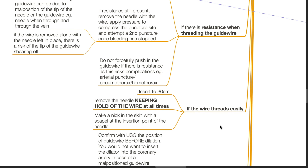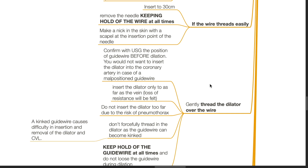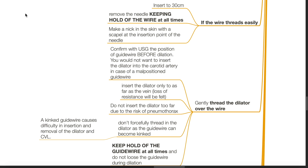If the wire threads easily, insert to 30 cm, remove the needle while keeping hold of the wire at all times, and make a nick at the skin with a scalpel at the insertion point. Gently thread the dilator over the wire. Confirm with ultrasound the position of the guide wire before dilation — it is not wise to dilate a carotid artery in case of a malpositioned guide wire. Insert the dilator only as far as into the vein; a loss of resistance will be felt as the dilator enters. Do not insert the dilator too far due to risk of pneumothorax.